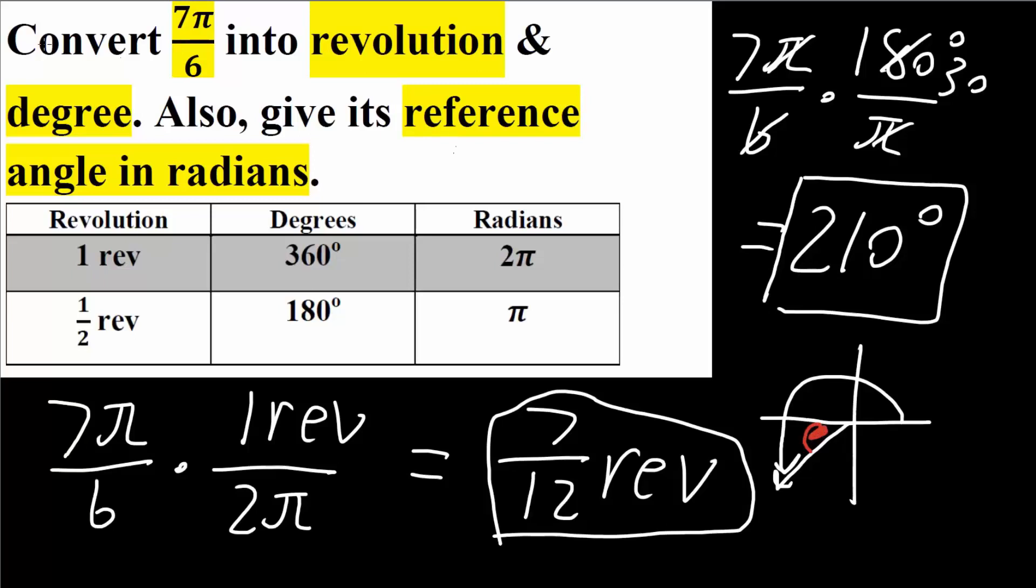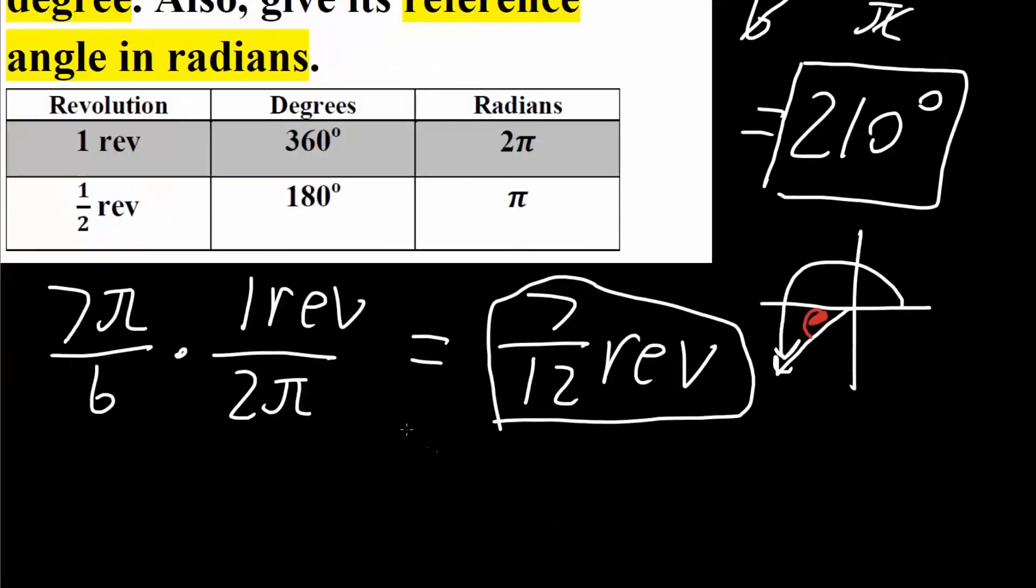If we know that from here to here is π, and from here to here is 7π over 6, therefore our reference angle would be 7π over 6 minus 6π over 6, which is π minus π.